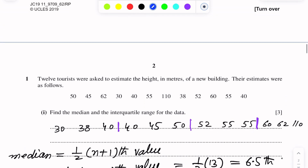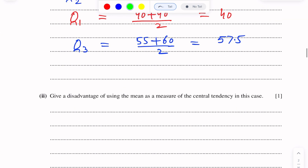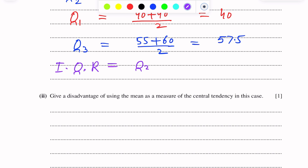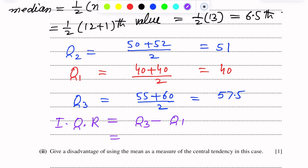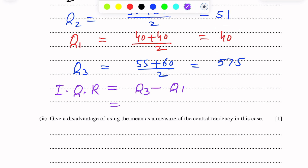Now we find the interquartile range. Interquartile range = upper quartile minus lower quartile = 57.5 − 40 = 17.5. This is the answer.